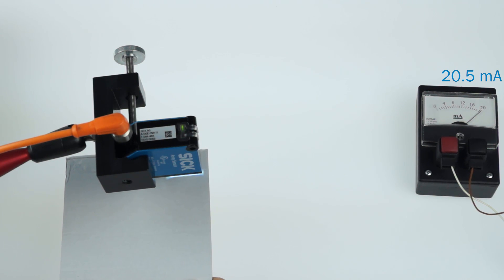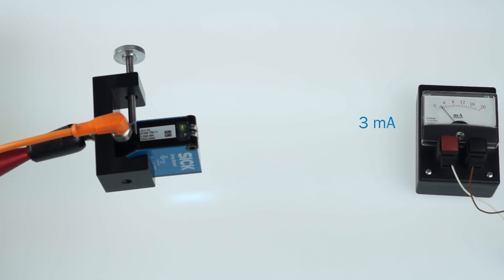If the material leaves on the opposite side, a value of 20.5 mA is shown. If a sudden signal loss occurs, which may happen with a web break or if the sensor has no orientation, the sensor displays 3 mA.